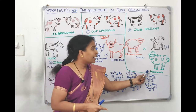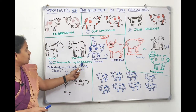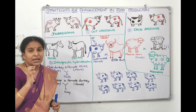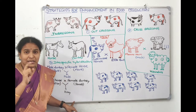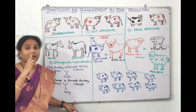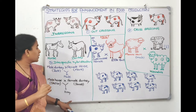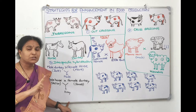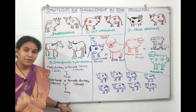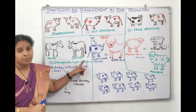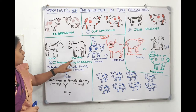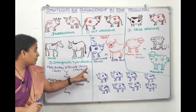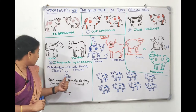The third type of outbreeding is inter-specific hybridization — hybridization between two different species. For example, horse and donkey are two different species. When we mate them we get a different variety. If the donkey is male and the horse is female, we get a mule.